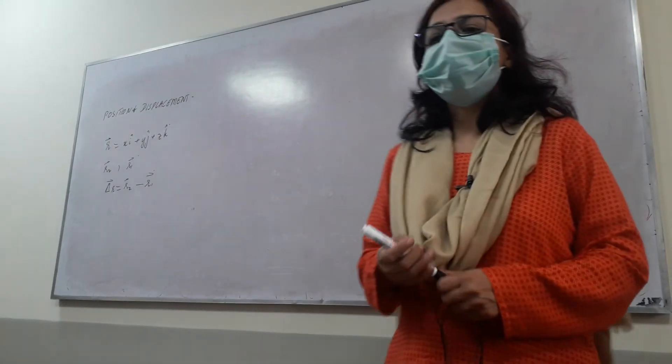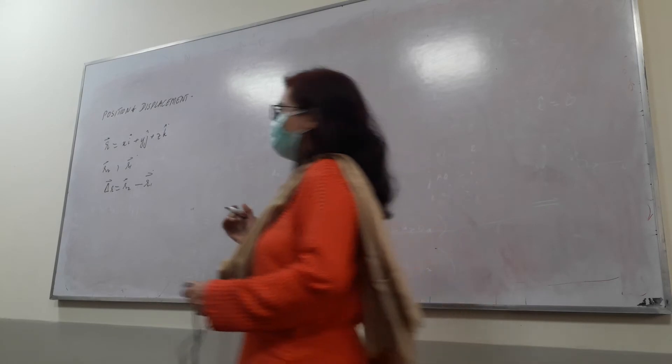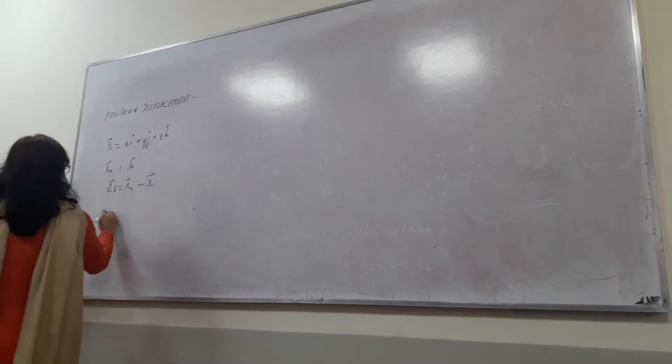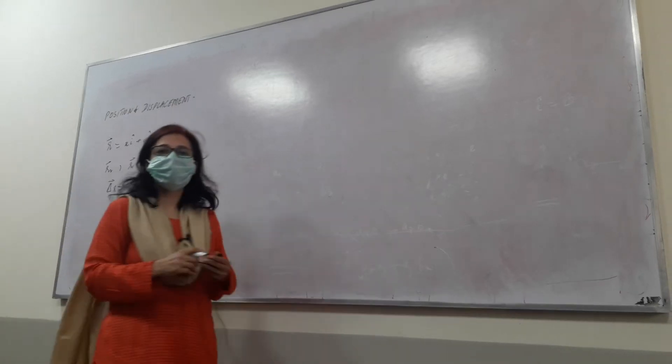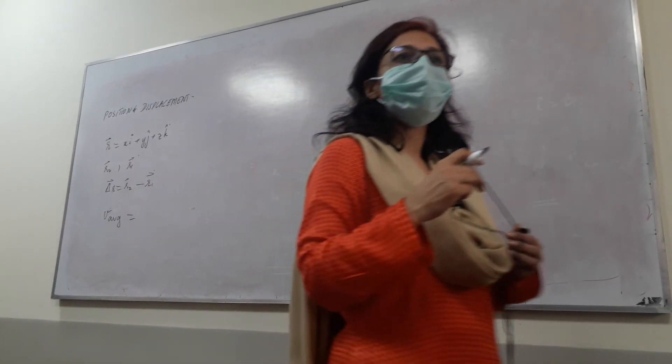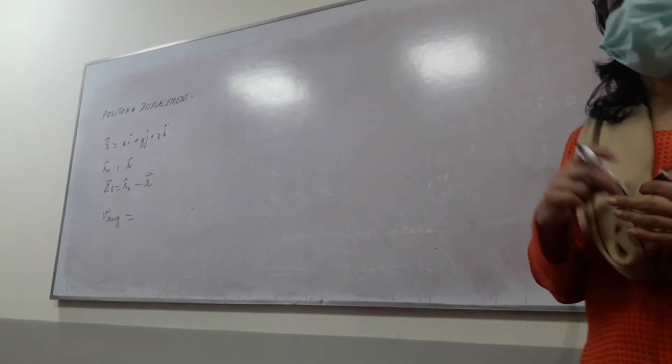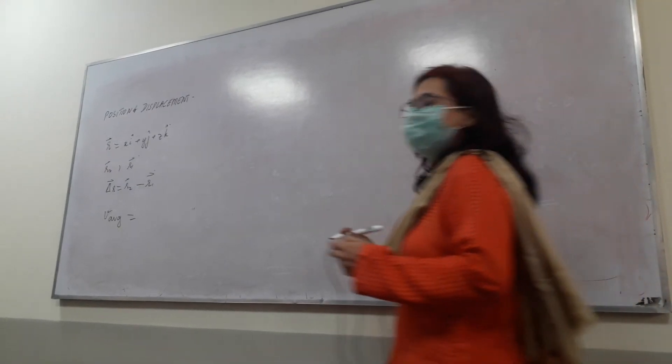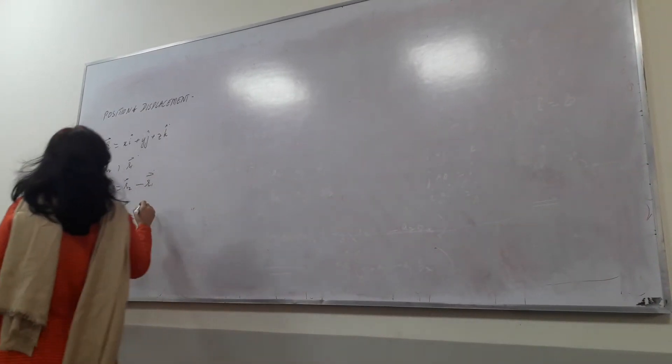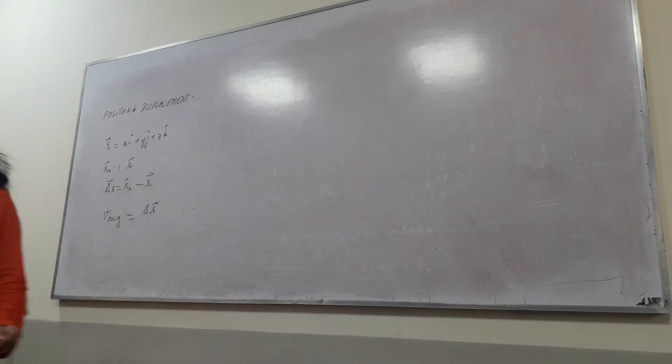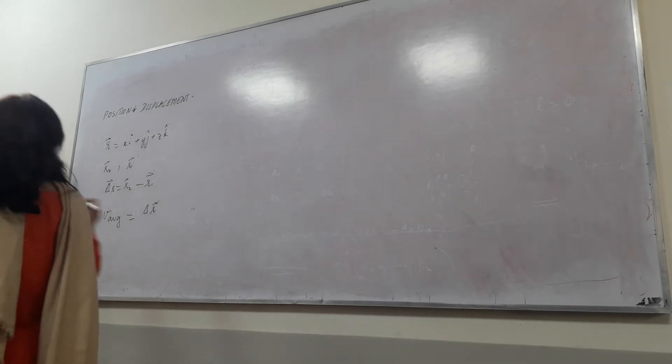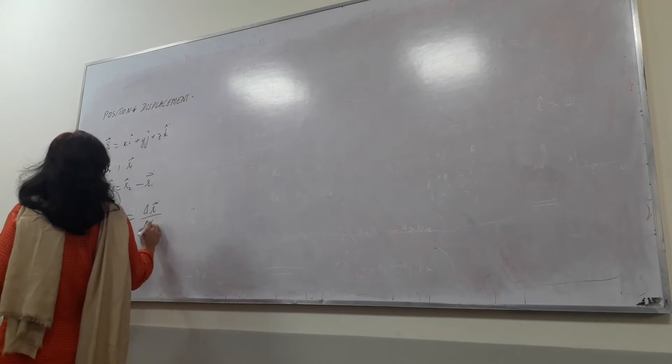Then there was the concept of average velocity, v average. How did we define v average? v average is the change in displacement divided by the change in time. In this case we are representing the displacement by the vector r. So it is delta r divided by delta t.